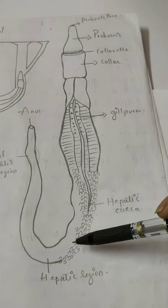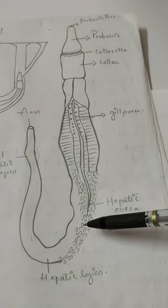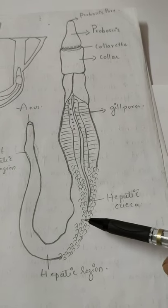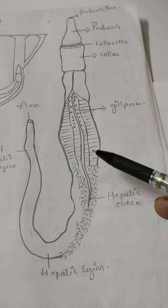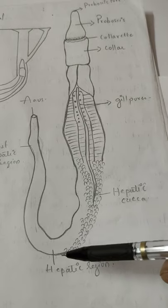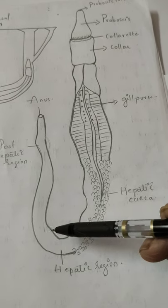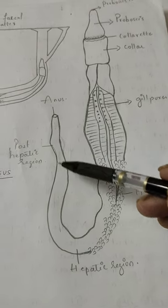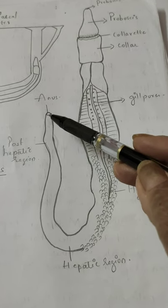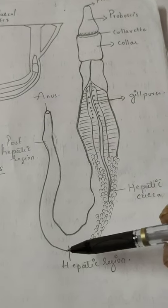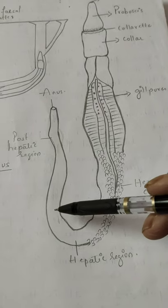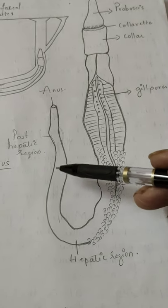The next part of the trunk is called the hepatic region. This region has round blind pouches called hepatic caeca. Behind the hepatic region is the post-hepatic region, which is very long and tapers to form a tail that opens to the outside by the anus. The post-hepatic region does not have any flaps, ridges, or pouches — its surface is smooth.